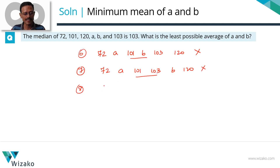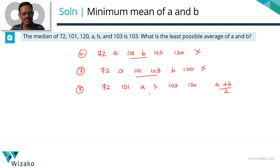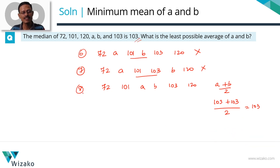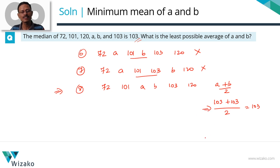Iteration 8: push a further to the right — between 101 and 103 — and bring b along. Ascending order: 72, 101, a, b, 103, 120. The middle two numbers are a and b; the median is (a + b) / 2. In this iteration, a and b can range from 101 to 103. When both a and b equal 103, the median is (103 + 103) / 2 = 103. We have met the constraint. So the least possible mean of a and b is 103.